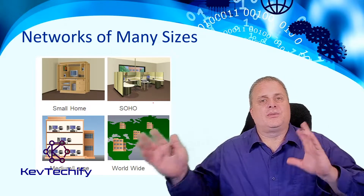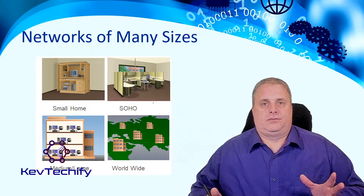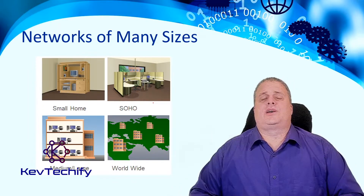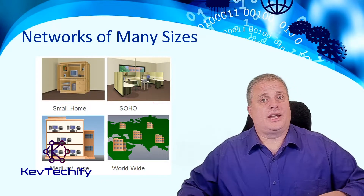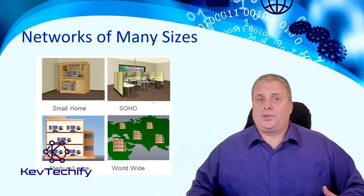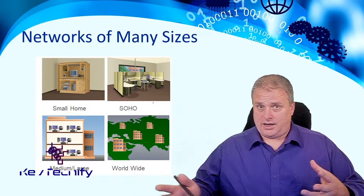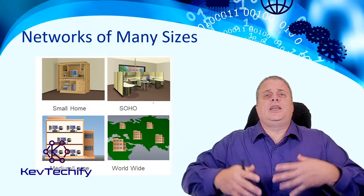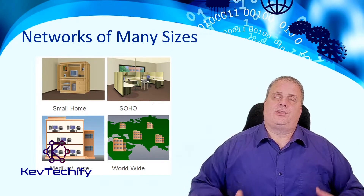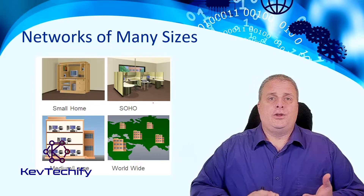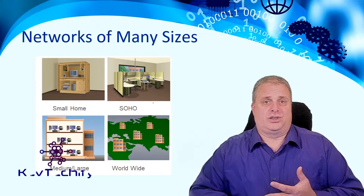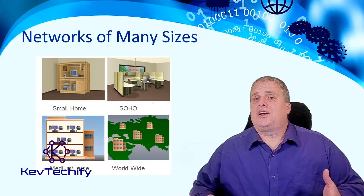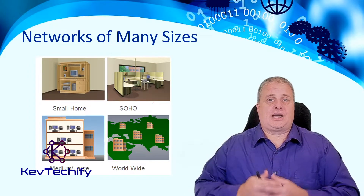The third type is the medium to large network — a company with hundreds, up to thousands, or even hundreds of thousands of computers. They typically span at least one building, maybe several buildings, several cities, states, or even countries. The requirements are very different here; you've got to have the reliability and the equipment to handle all of those users and hundreds of thousands of end devices.